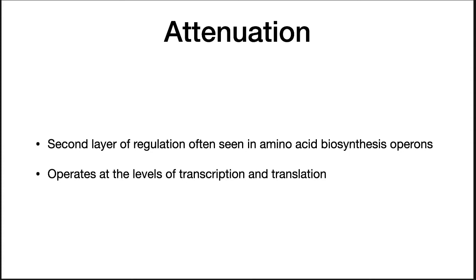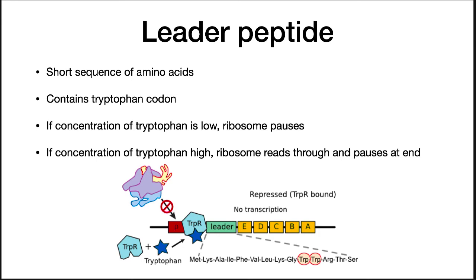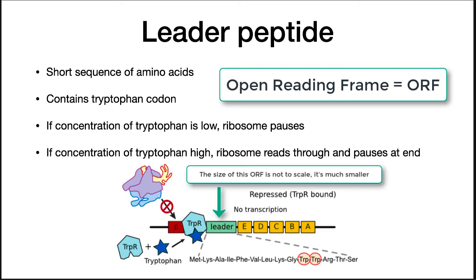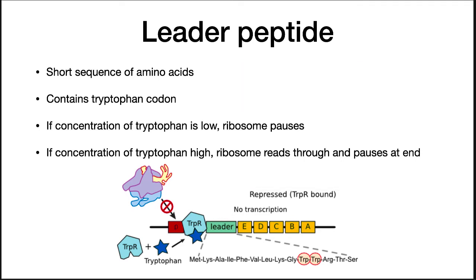Attenuation is the second layer of regulation often seen in amino acid biosynthesis operons. It operates at the level of transcription and translation. The process by which attenuation is regulated by translating ribosomes depends upon the makeup of the 5' end of the mRNA transcript. mRNAs involved in this sort of attenuation are unusual in that the first open reading frame, or ORF, is very small, and the encoded protein does not actually function in amino acid biosynthesis. These ORFs, termed leader peptides, are translated. The ease with which they are translated affects whether or not transcription termination takes place between the ORF and the genes that follow. In each mRNA, the first ORF is rich in codons that specify the amino acid under regulation.